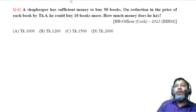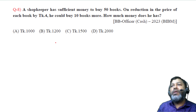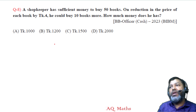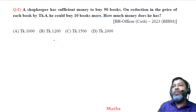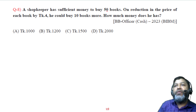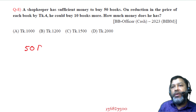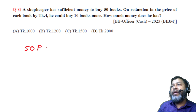Question number 8: A shopkeeper has sufficient money to buy 50 books. On a reduction in the price of each book by taka 4, he could buy 10 books more. How much money does he have? Let the price of each book be P, so total money is 50 times P, which equals 50P.